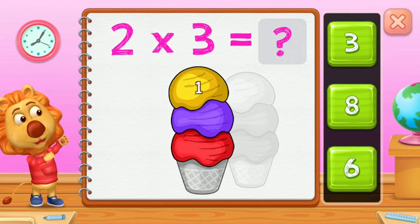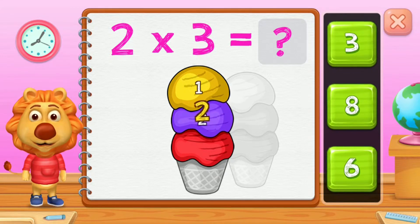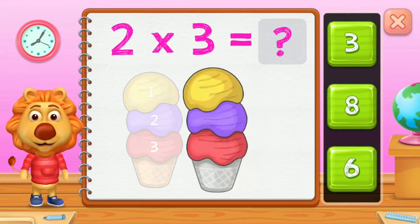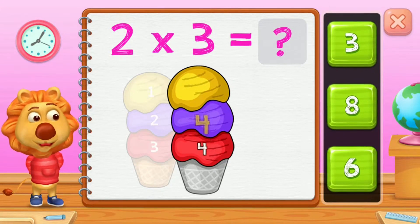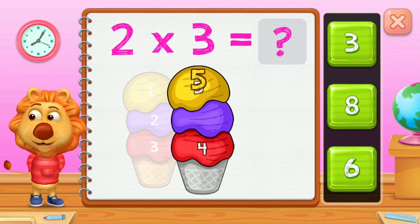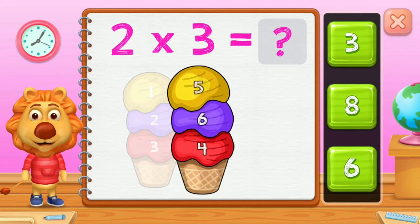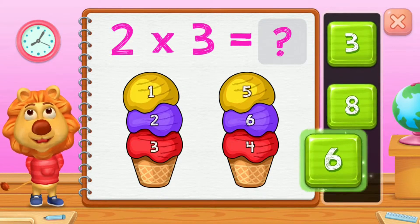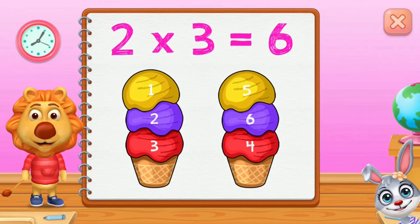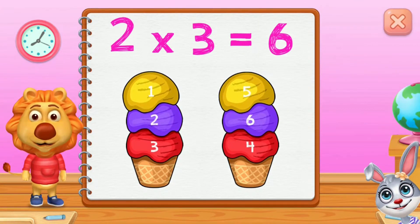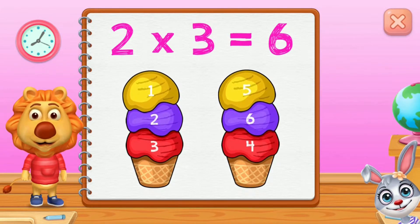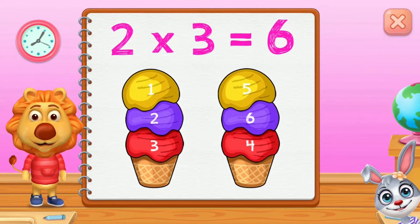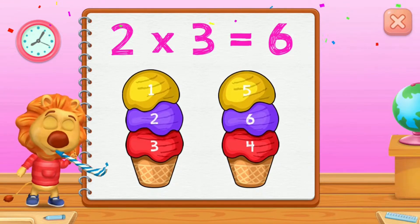One, two, three, four, five, six. Two groups of three equals six.